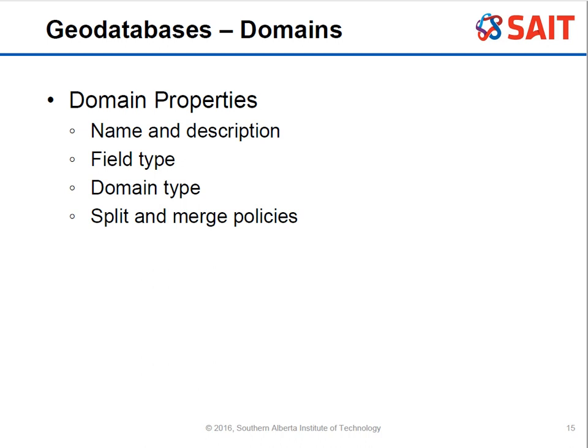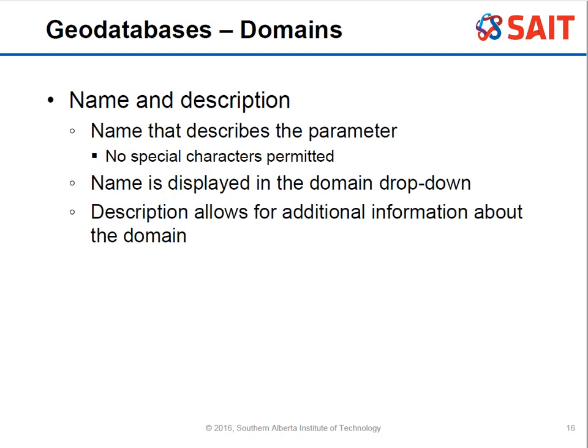Domain properties include four things: name and description, field type, domain type, and split and merge policies. The name and description allow you to access the domain — give a good name so you know what the parameter is. You can't use any special characters. The name is displayed in the domain dropdown so you can apply it to a particular feature class. The description allows for additional information about why it's in place.